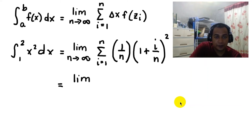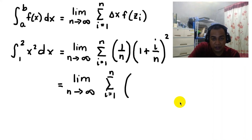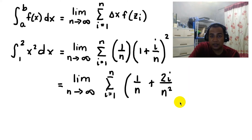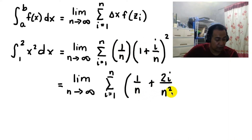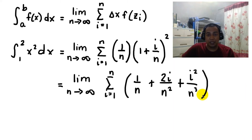We can write this as the limit as n approaches infinity of the summation from i equals 1 to n of (1 plus i over n) squared times (1 over n). Distributing: we square (1 plus i over n) to get 1 plus 2i over n plus i squared over n squared, then multiply each term by 1 over n, giving 1 over n plus 2i over n squared plus i squared over n cubed.